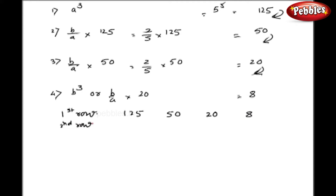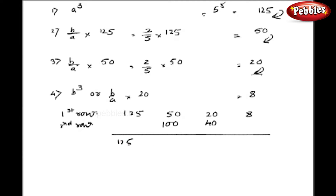For the calculation of the second row, I will simply double the middle figures, that is 50 and 20. So I get 100 and 40. Let us add them: 125 remains as it is, here I get 150, 60, and 8.